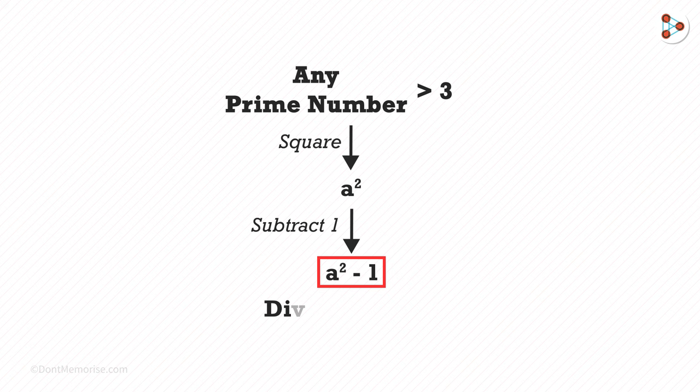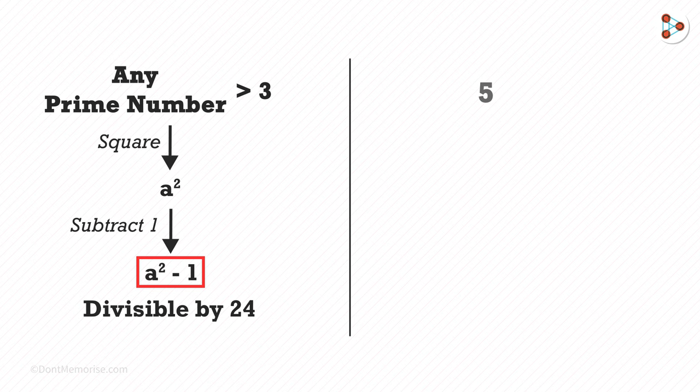Let's look at a few examples. Suppose we consider a prime number 5. Its square is 25 and 25 minus 1 is 24. It's divisible by 24.